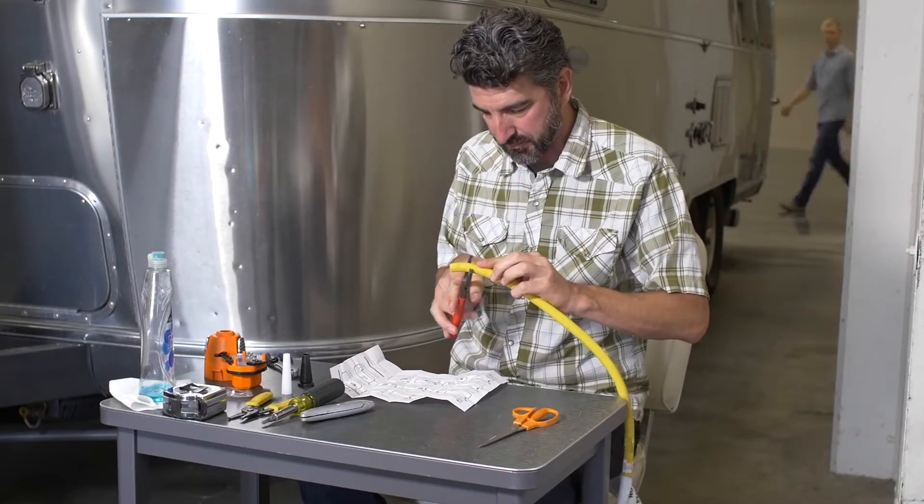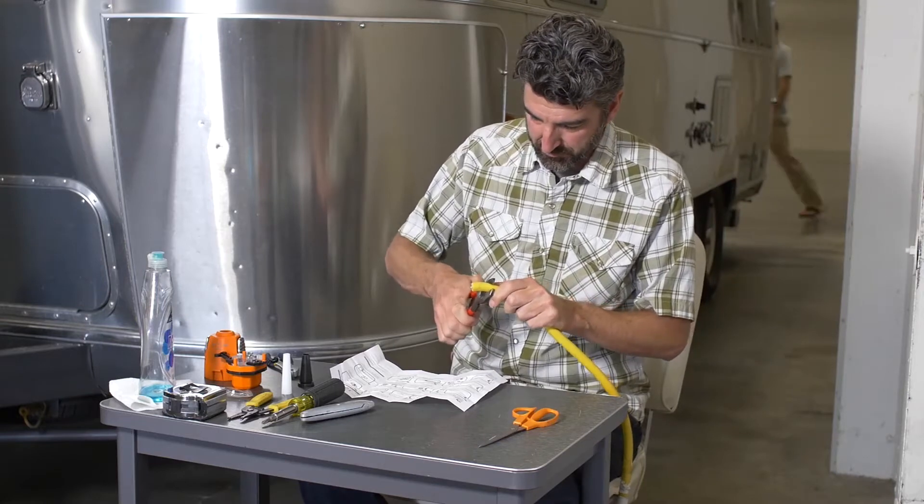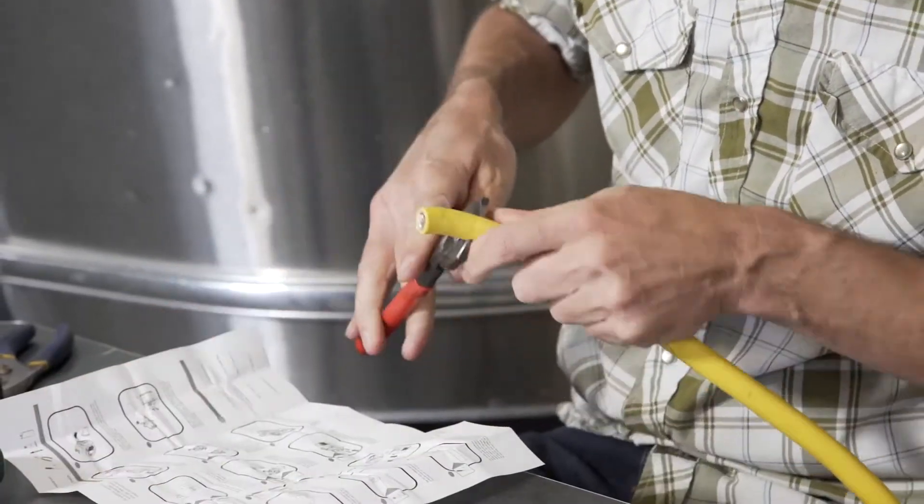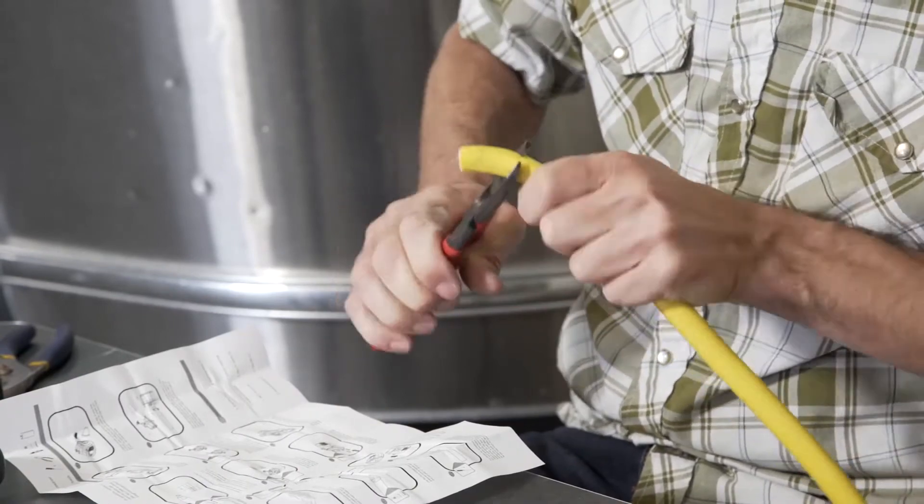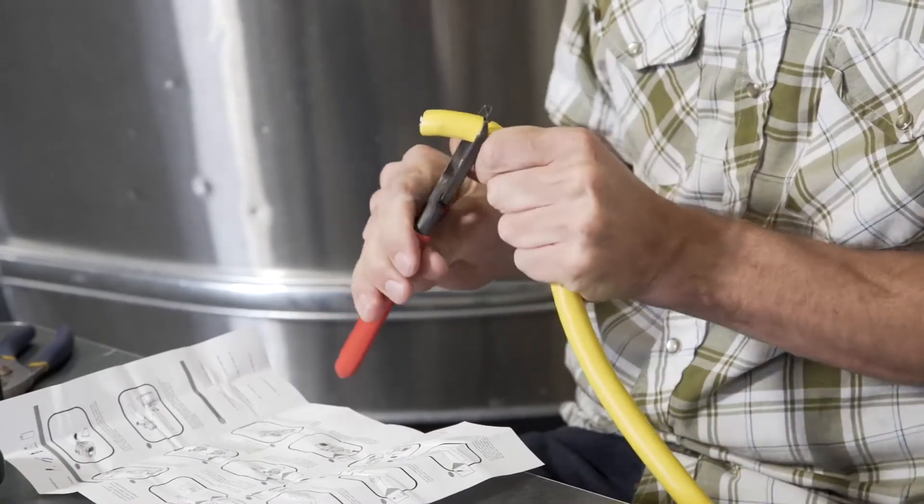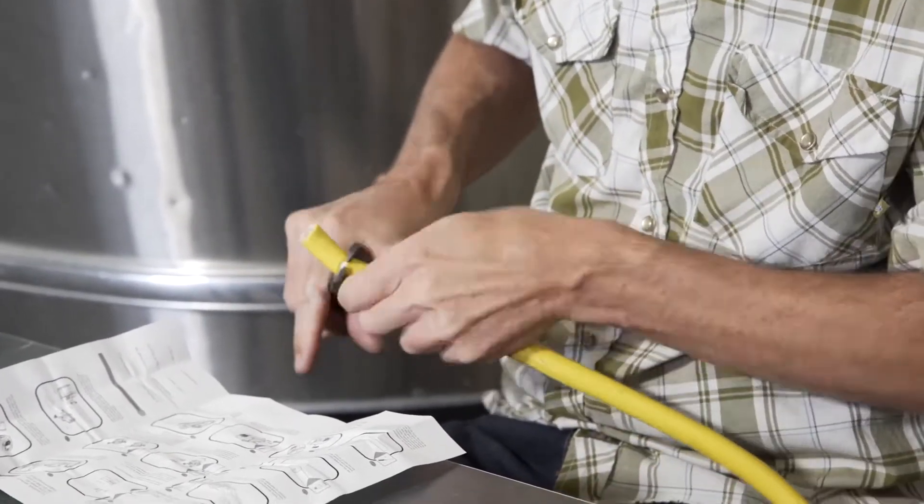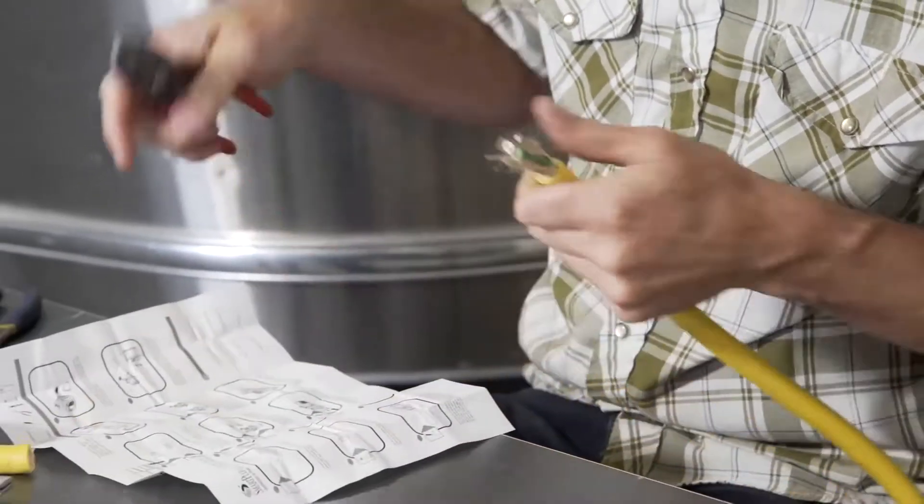Measure one and a quarter inches back from the freshly cut cord end and use marker to indicate where to cut. Then, lightly score the outer jacket with a utility knife and be sure not to cut any of the inner wires. Remove only the inch and a quarter segment of the outer jacket, exposing the inner wires and the fibrous cord filler.